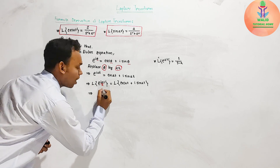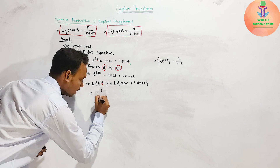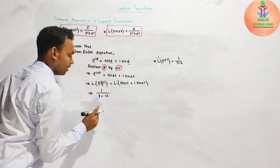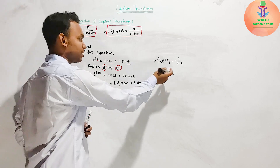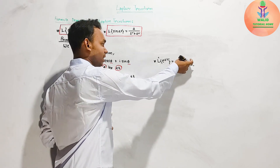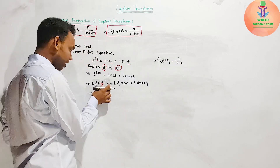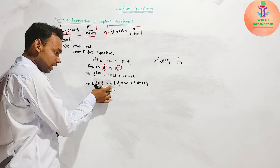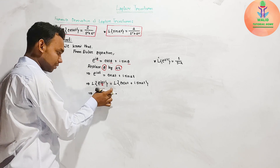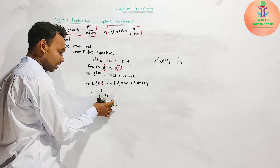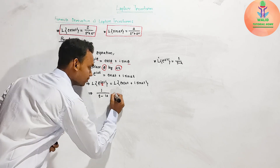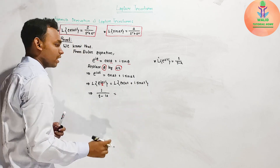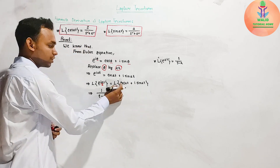Therefore, the Laplace transform of e^(iat) equals 1/(s minus ia). Also, the Laplace transform of e to the power i·at, considering the linear property, can be written as the Laplace transform of cos(at) plus i times the Laplace transform of sin(at).